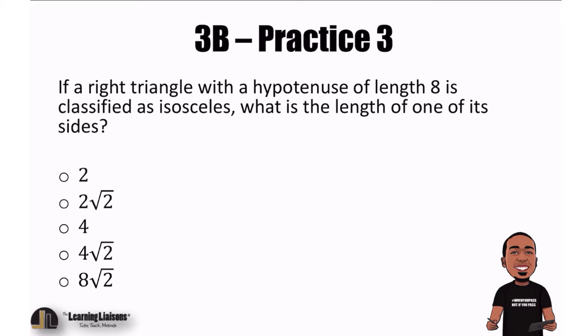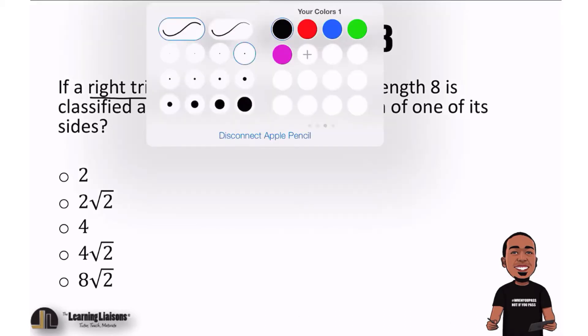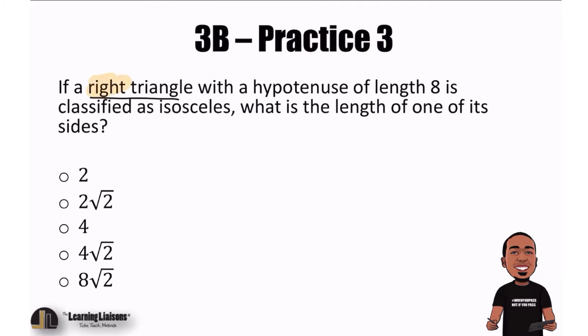If a right triangle... I'll use a highlighter actually. So, a right triangle, hypotenuse of length 8. This triangle is also isosceles. We want to know the length of one of its sides.